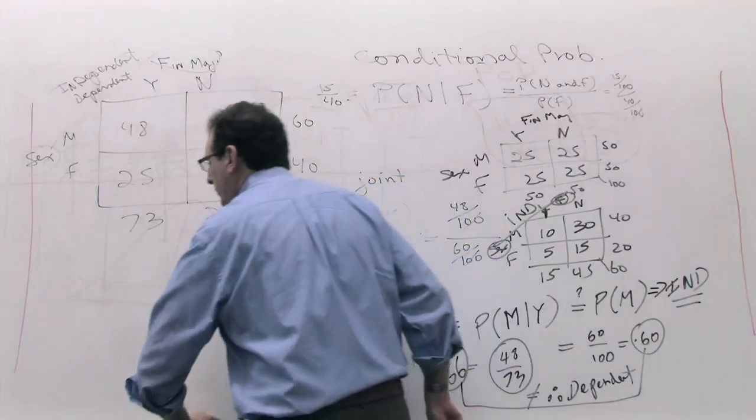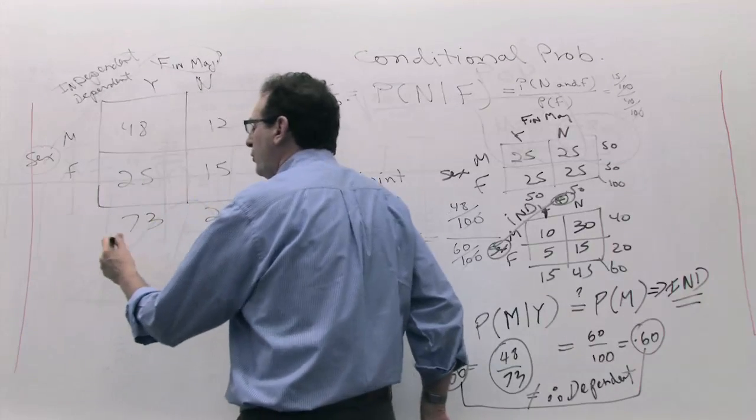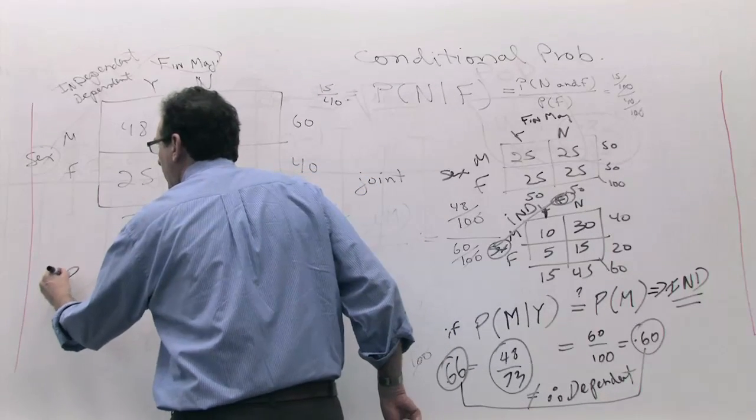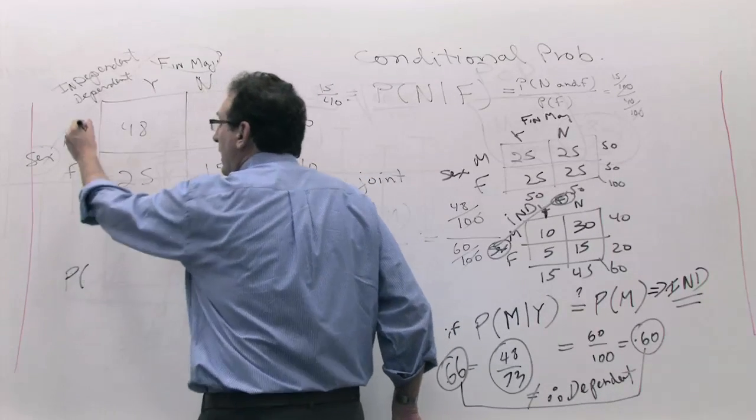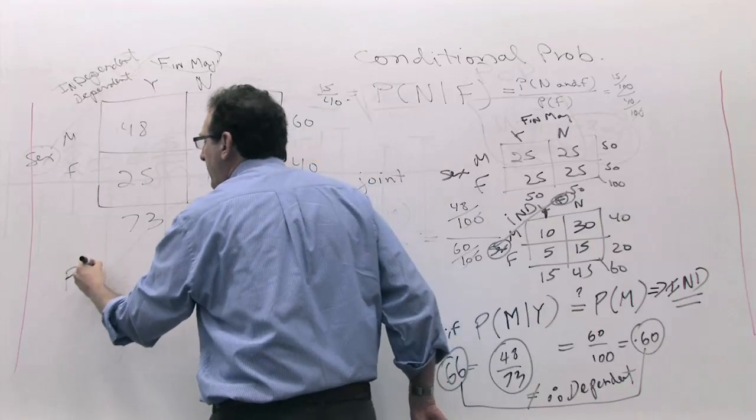This is just another way of proving two variables are independent. If you go back to our original formula, and now I used F and Y or M and Y, let's use A and B.